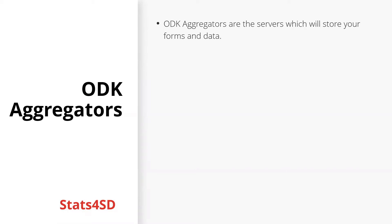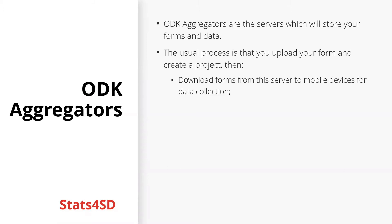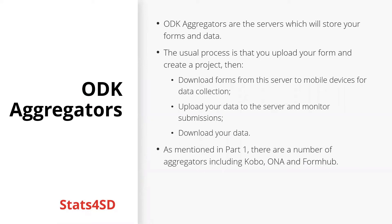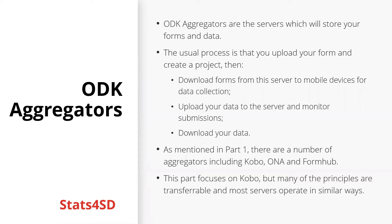Let's remind ourselves of exactly what an ODK aggregator is. An ODK aggregator is the server which will store your forms and your data. The usual process is that you upload your form and create a project, download forms to mobile devices for data collection, upload your data to the server and monitor submissions, and finally download your data. As mentioned in part one, there are a number of aggregators including Kobo, Honor, and FormHub. Most servers operate in similar ways and will allow you to do similar things, such as data monitoring, setting projects, and uploading media files integral to your forms.